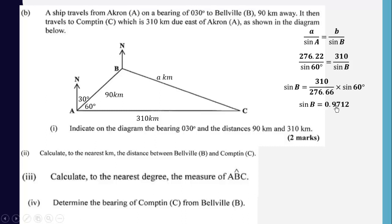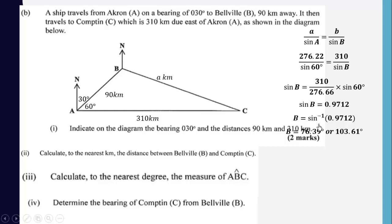We find that sin(B) = 0.97122. By trigonometry, this is positive in both the first and second quadrants. Taking the inverse sine gives either 76.39 degrees (the acute angle) or 103.61 degrees (the obtuse angle). Since the angle at B is clearly obtuse from the diagram, angle ABC = 104 degrees to the nearest degree.